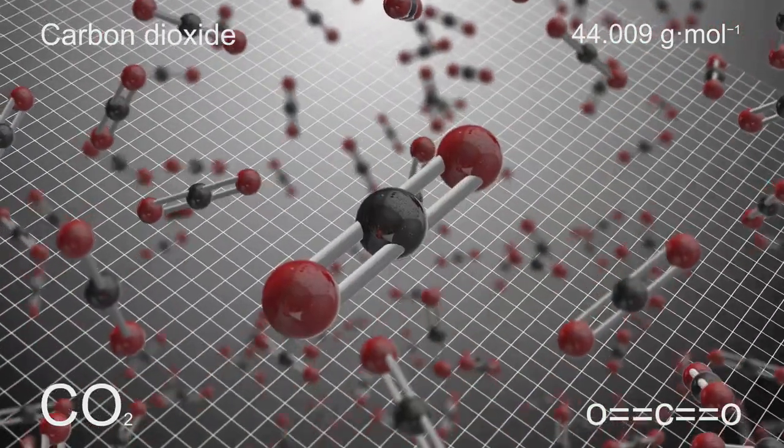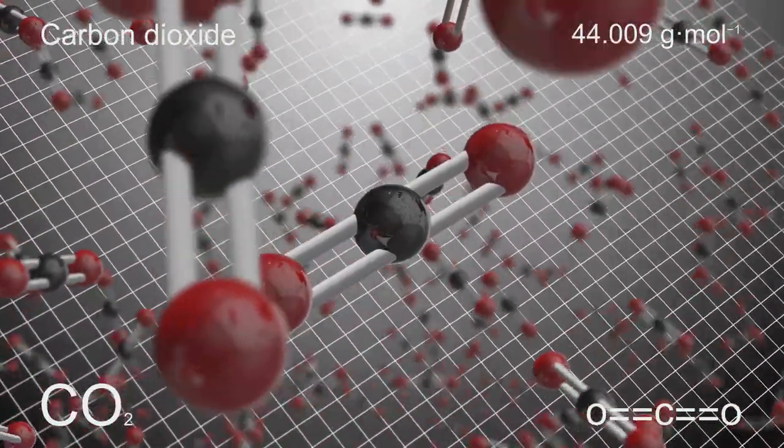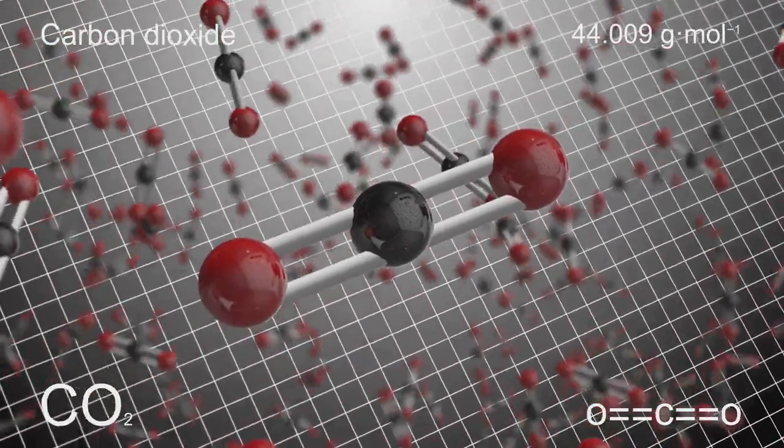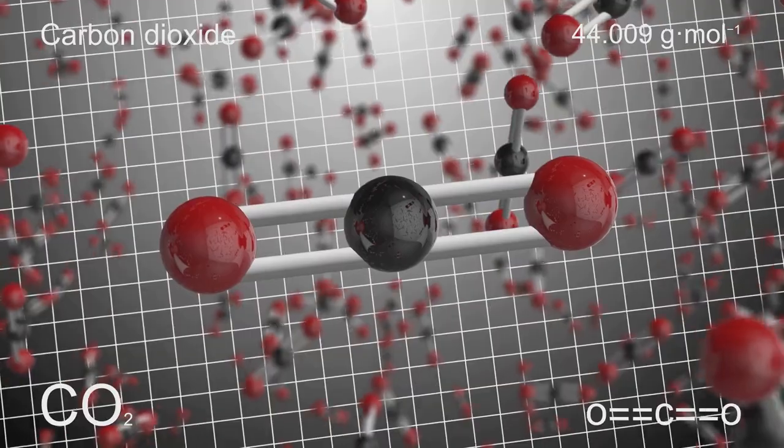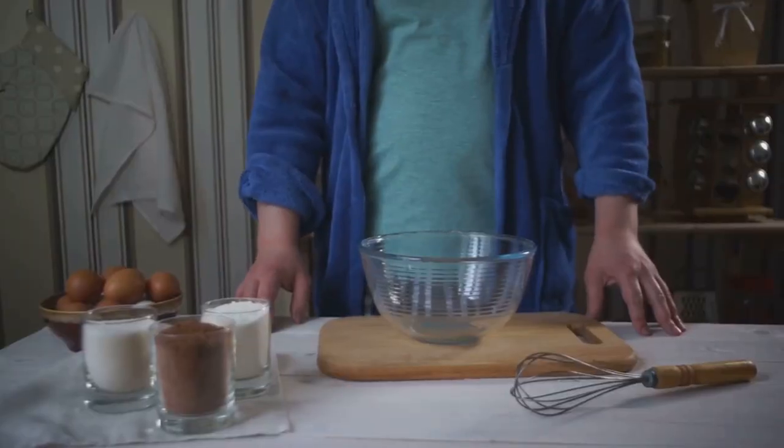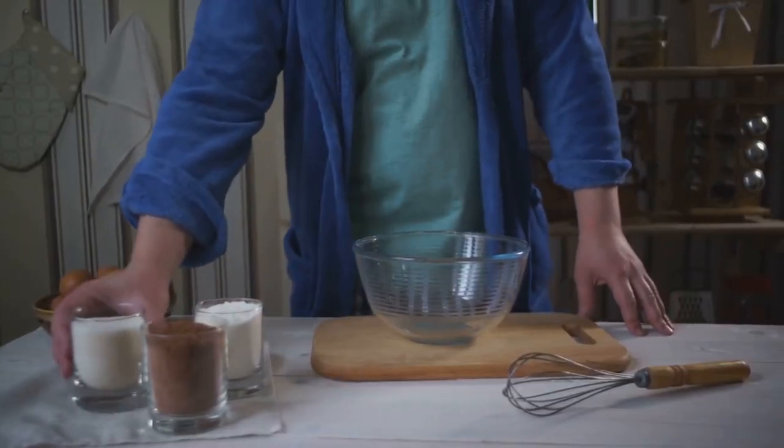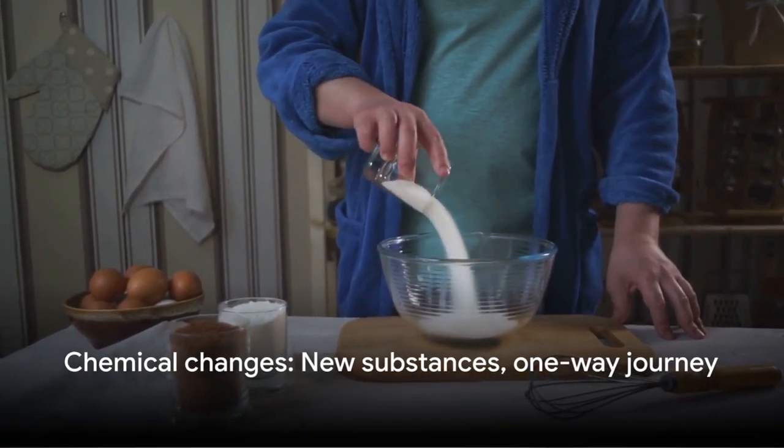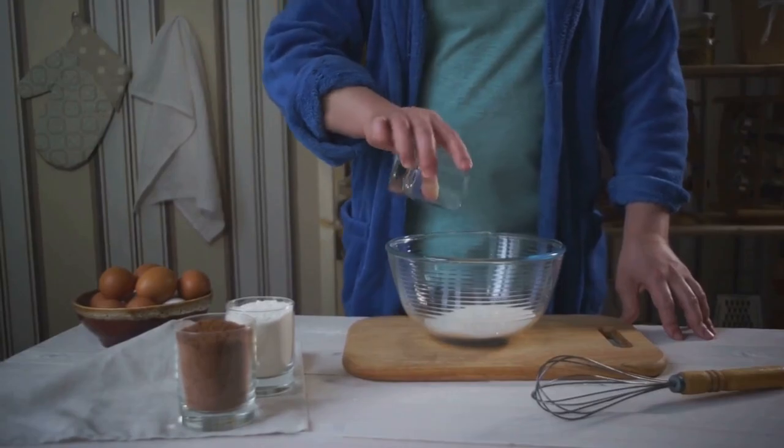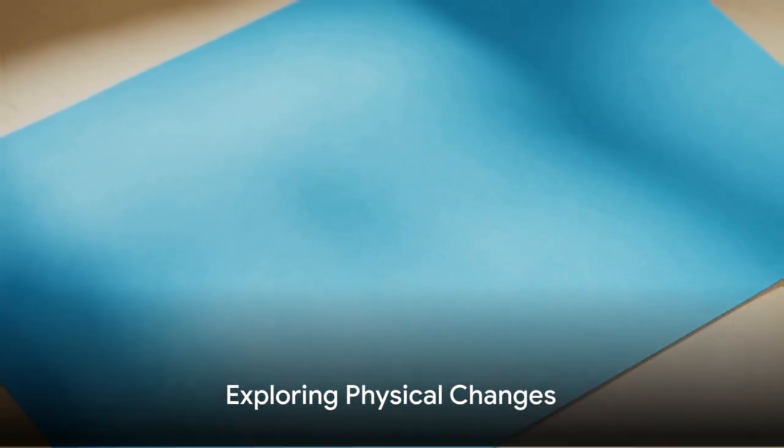It's important to note that chemical changes often create new substances that we can't easily change back. It's usually a one-way journey. Think of it like baking a cake—once you've baked it, you can't get your original ingredients back. So remember, chemical changes mean new substances are formed, and it's often a one-way journey.